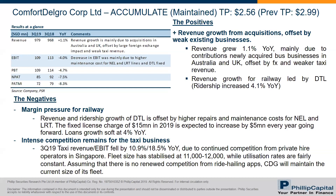The negative is margin pressure for railway. Even though there is high ridership growth for Downtown Line, it is mainly offset by high repairs and maintenance costs for NEL and LRT. There is also a fixed license charge for Downtown Line to be paid to LTA in 2019, expected to grow by $5 million every year going forward. Intense competition remains for the taxi business, with 3Q19 taxi revenue falling 10.9% year-on-year due to continued competition from private hire operators. Although fleet size has stabilized, there are not many signs of recovery.